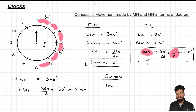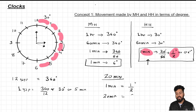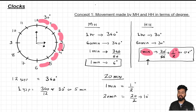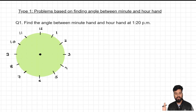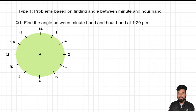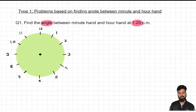After understanding this, let's see the application. We start with the first type: finding the angle between minute hand and hour hand. A time is given — in our case the time is 1:20 — and we have to find the angle between minute hand and hour hand. There are a few steps to follow.